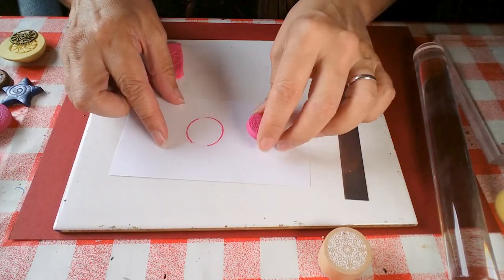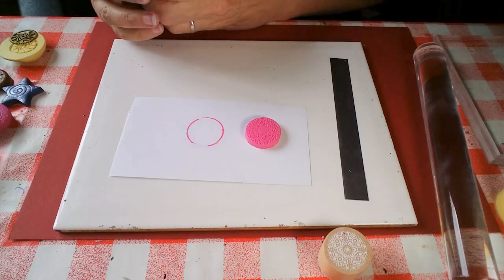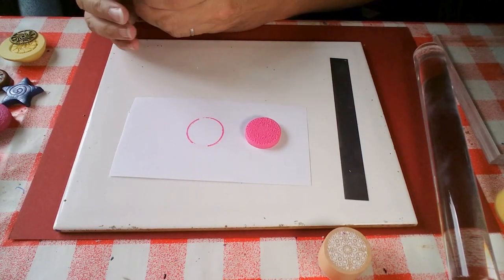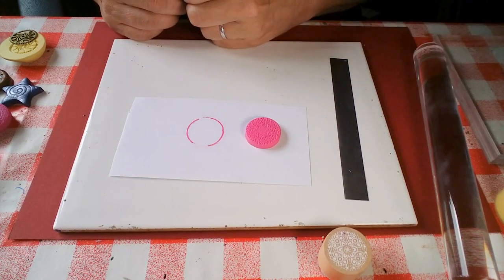When you bake them, you want to bake them on a piece of paper like this, preferably not one that's been on the floor. And that will stop the underside from going shiny. Put them in the oven, bake them according to your manufacturer's instructions, and I definitely advise you to use an oven thermometer.